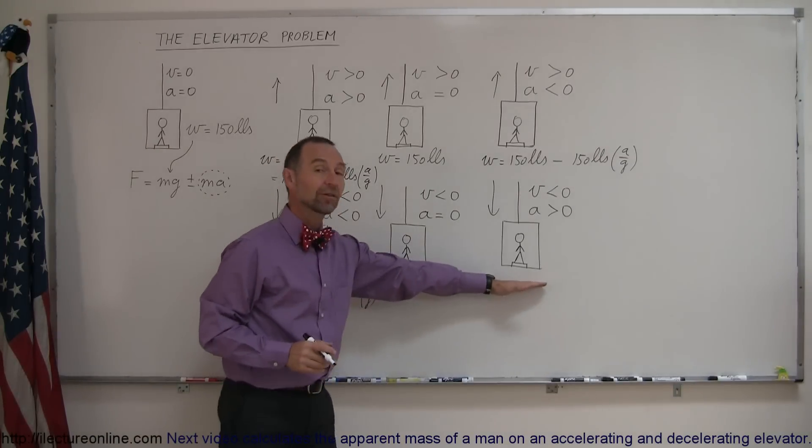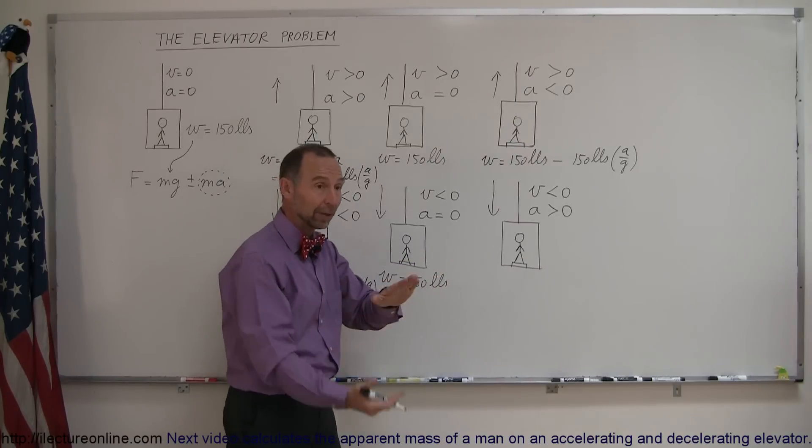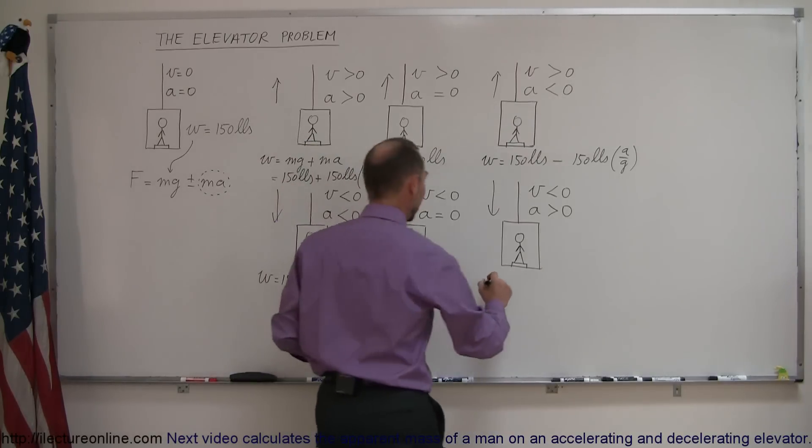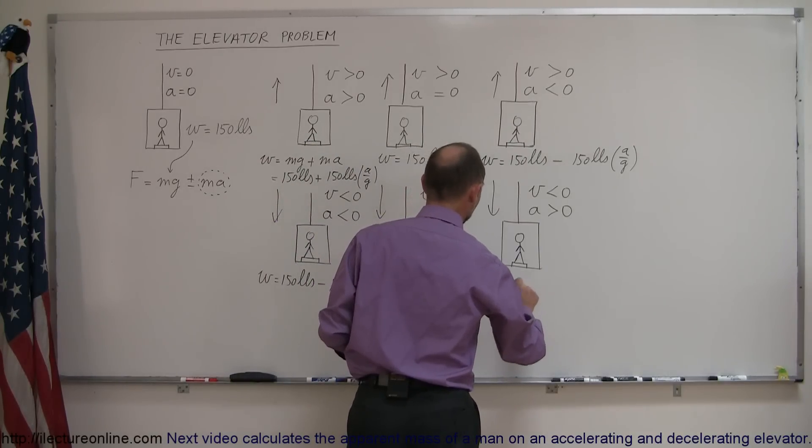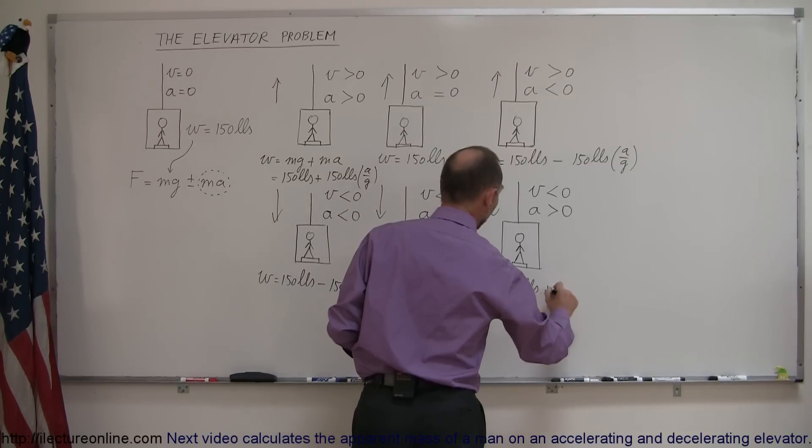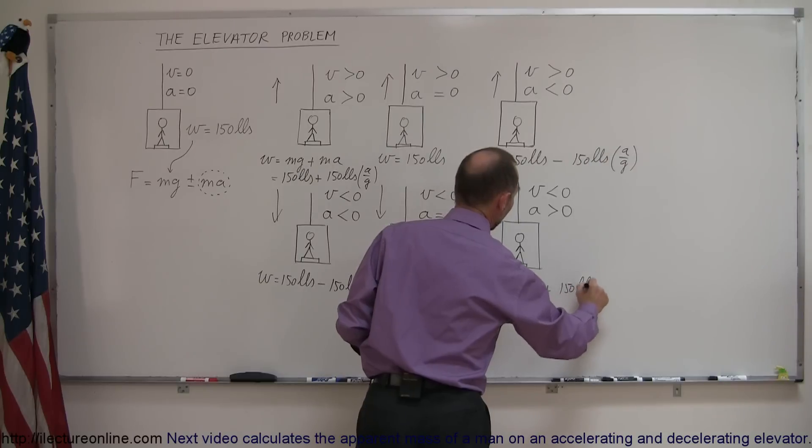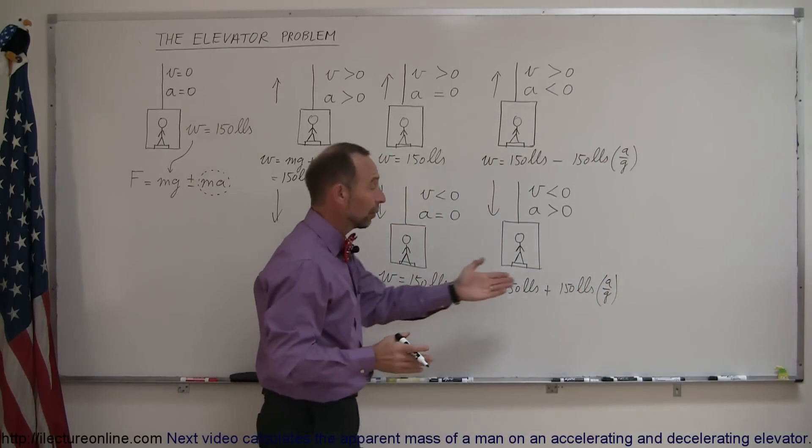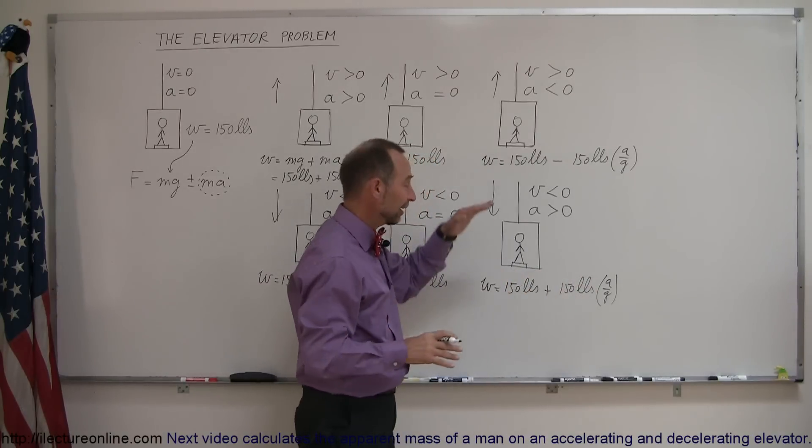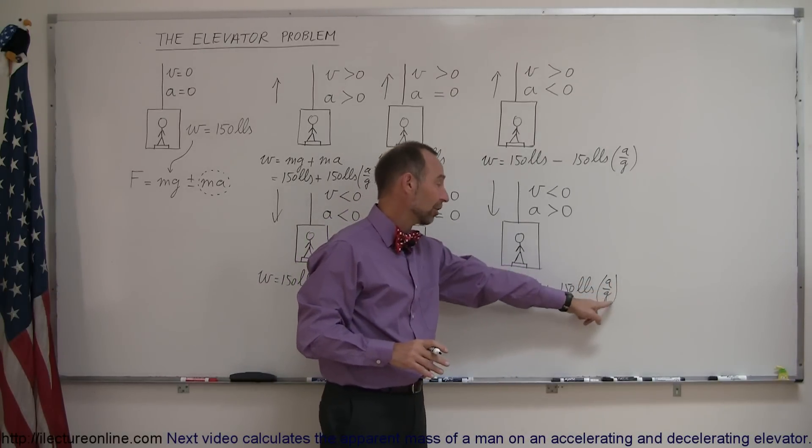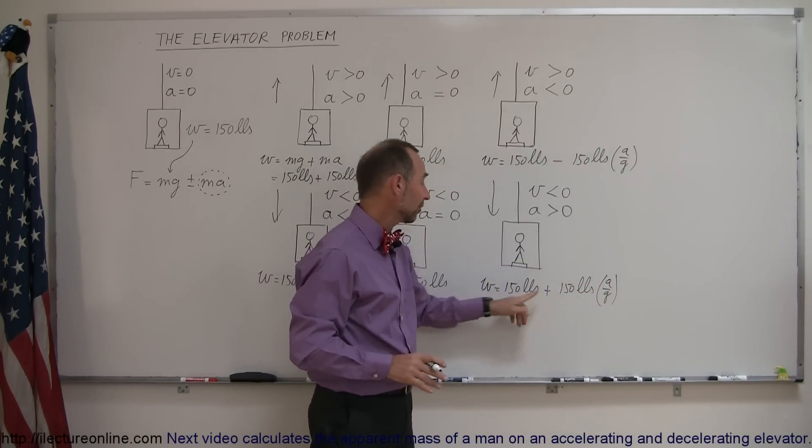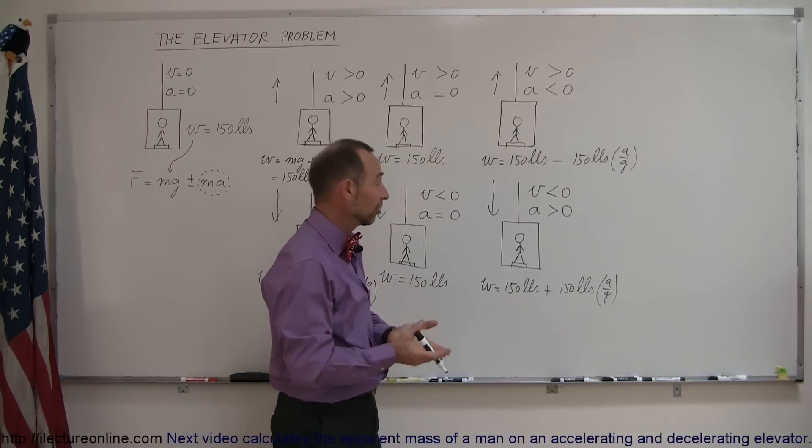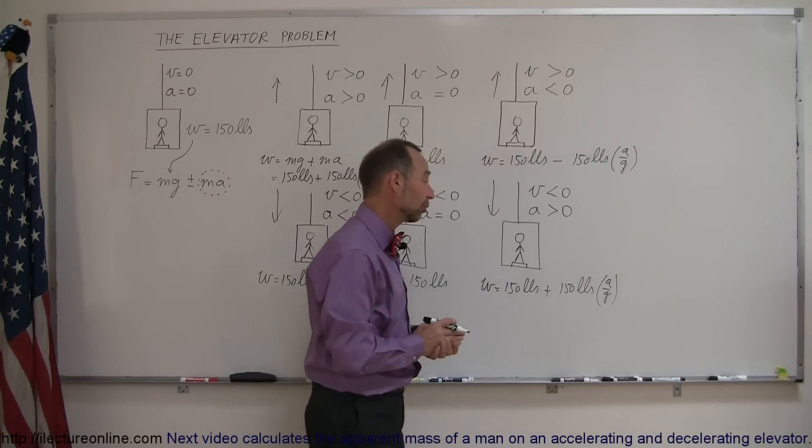But when the person reaches the final destination, the elevator is slowing down with the acceleration upward, then we have the weight is equal to 150 pounds plus 150 pounds times the ratio of a over g. Again, if the acceleration, the slowing down of the elevator in a downward motion, is 10 percent of g, then this would be 15 pounds and the person would feel as if they're 165 pounds and that's what the scale would show.